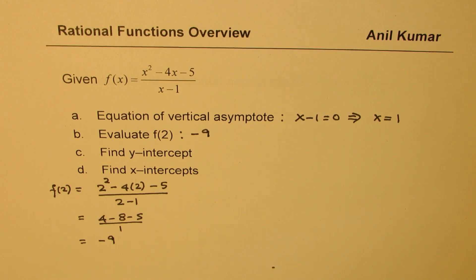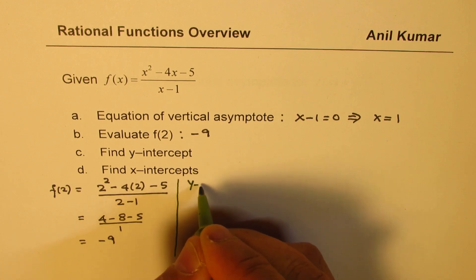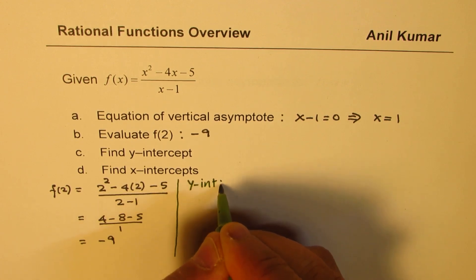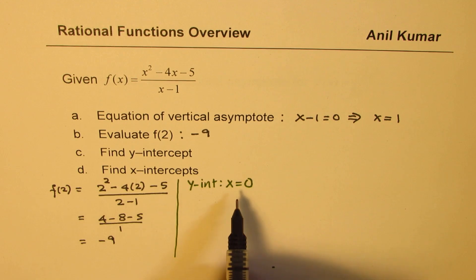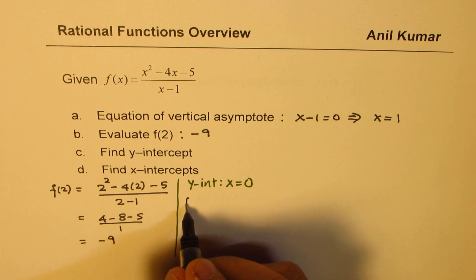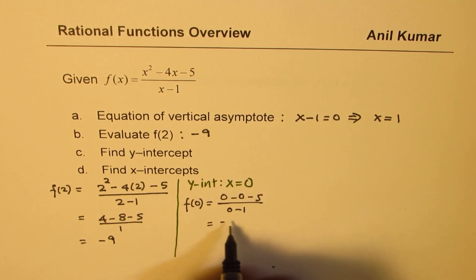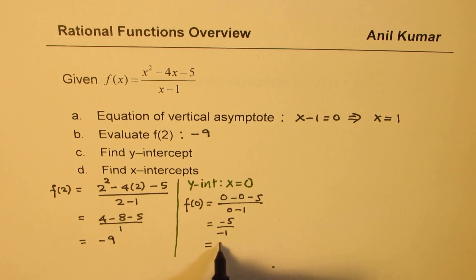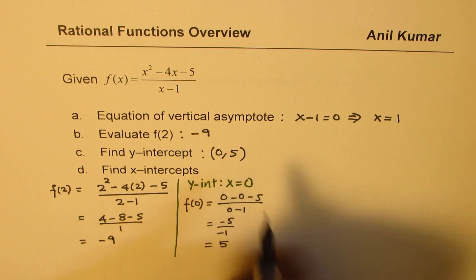Then we need to find the y-intercept. To find the y-intercept, substitute x equals 0 — that is the point where the graph crosses the y-axis. So f(0) equals 0 minus 0 minus 5, over 0 minus 1, which is minus 5 over minus 1. That gives the value 5. So the y-intercept is at (0, 5).